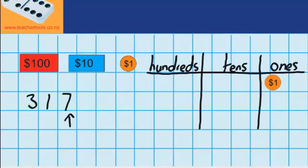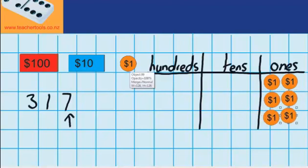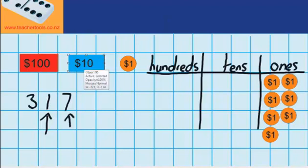There's one, two, three, four, five, six, and seven. Now if I come back over here, I can see that 317 has got one $10 note. So let's move that across. There we go, one $10 note.